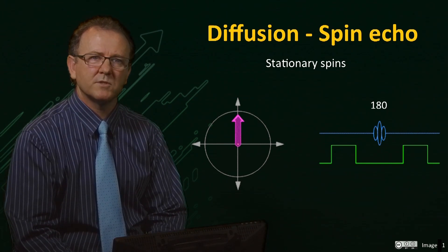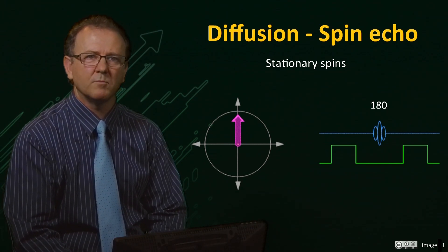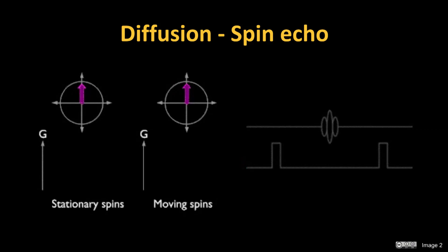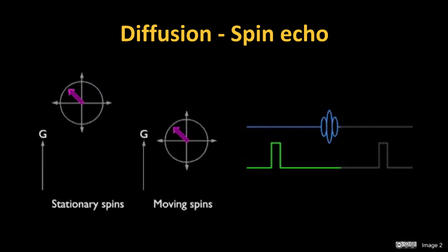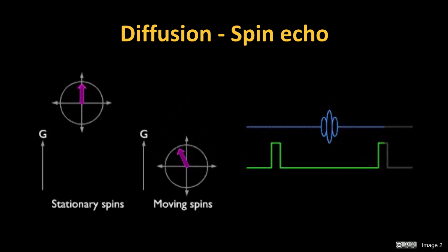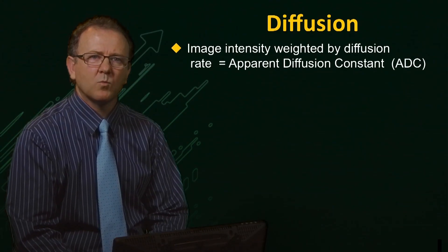This echo forms because the precession imposed by the gradient is identical before and after the 180-degree pulse. For diffusing spins, as the spin moves through the field gradient, its rate of precession changes accordingly, and following the 180-degree pulse, the spin may not have experienced the same field strength as before. Therefore, the spin vector will not be aligned along the same axis as before. For a collection of spins, this results in a reduction in intensity of the spin echo, since all spins do not refocus. So the image intensity becomes weighted by the diffusion.